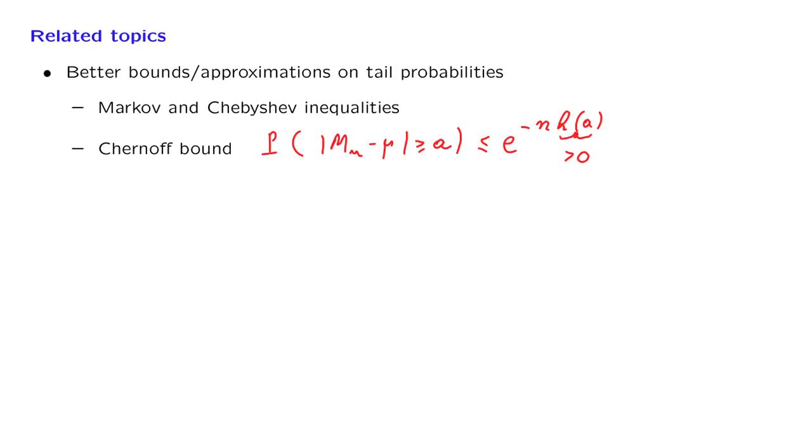Notice that this is much better, much stronger than what we obtain from the Chebyshev inequality, because in the Chebyshev inequality, we only obtain an inequality for this probability that falls off at the rate of 1 over n. So this falls much faster, and so it tells us that this probability is indeed much smaller than what the Chebyshev inequality might predict.